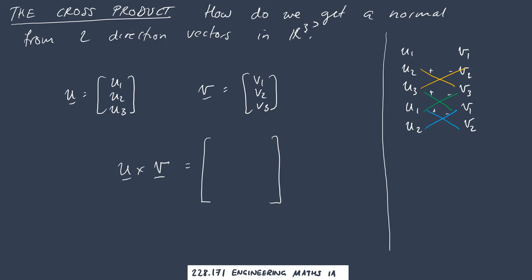For the yellow shoelace, I'll have u2 times v3, which will be positive u2v3, and then minus u3v2.